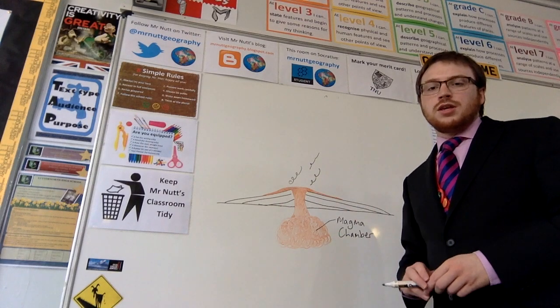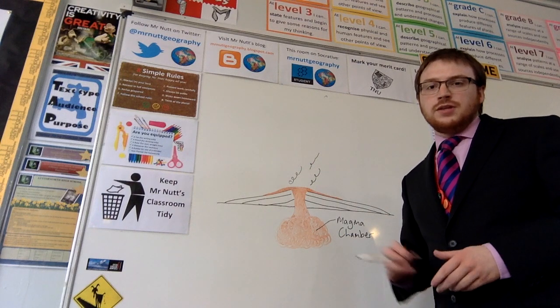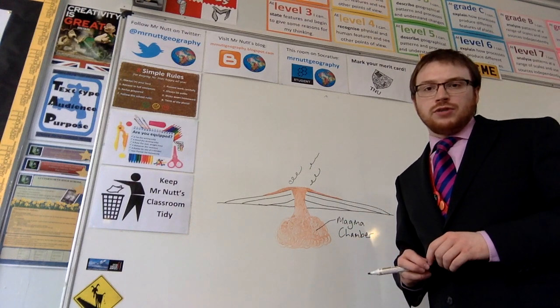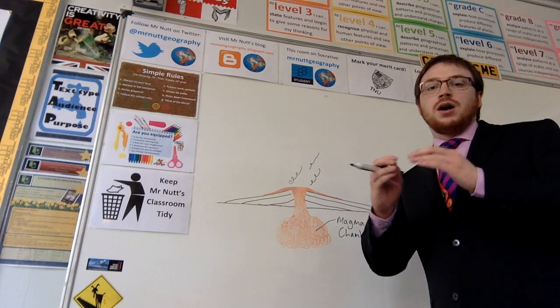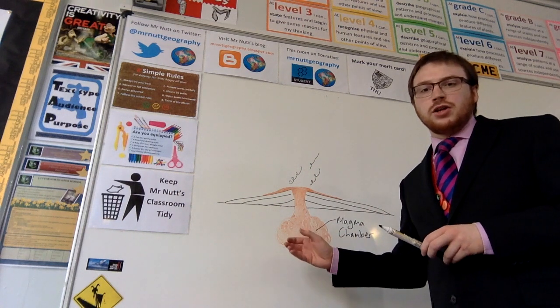So now we come to the contrasting shield volcano. These form at the constructive plate boundaries, where the plates are moving apart, meaning the magma underneath isn't under pressure.